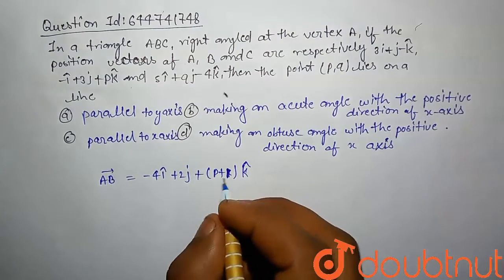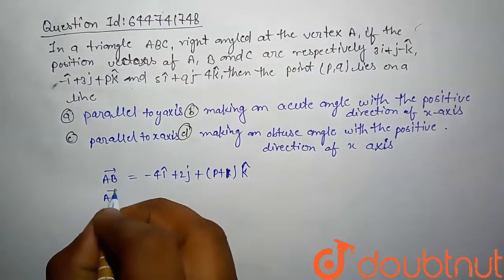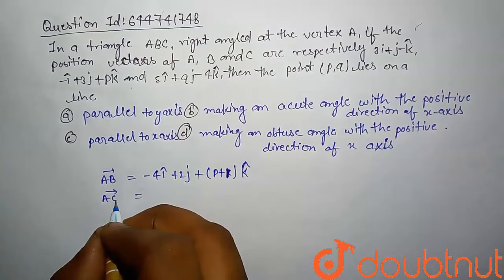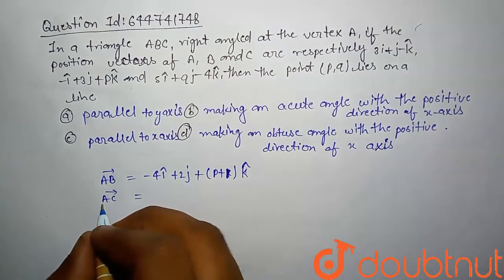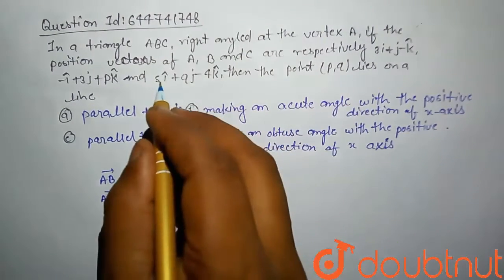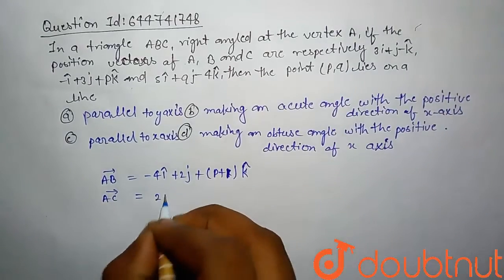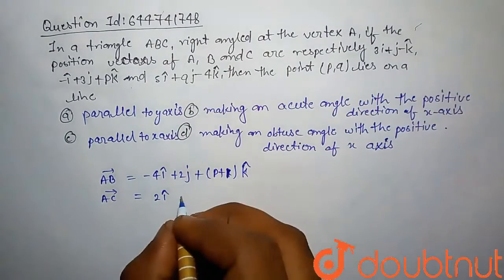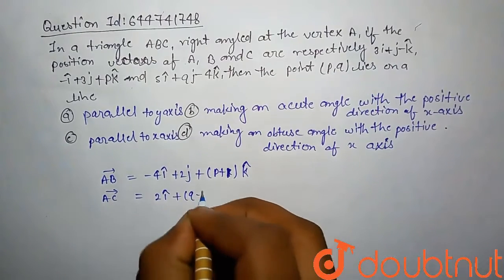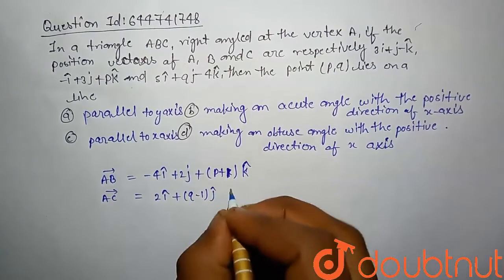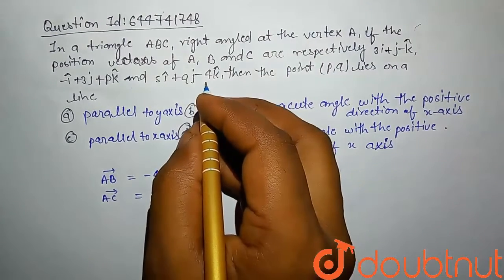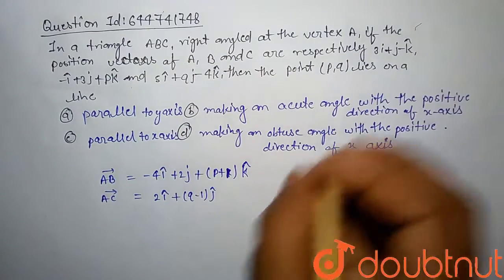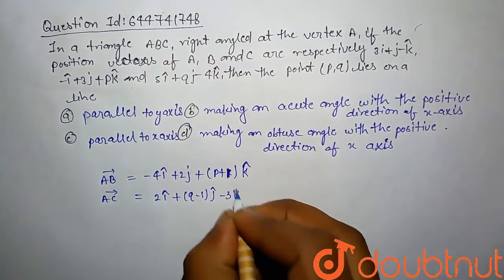We also have to compute vector AC, which is position vector of C minus A: 5 minus 3 which is 2i cap, (q-1)j cap, -4 plus 1 which is -3k cap.